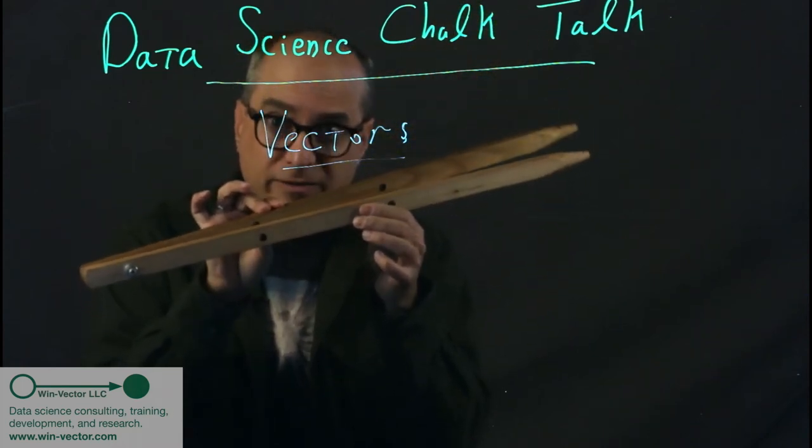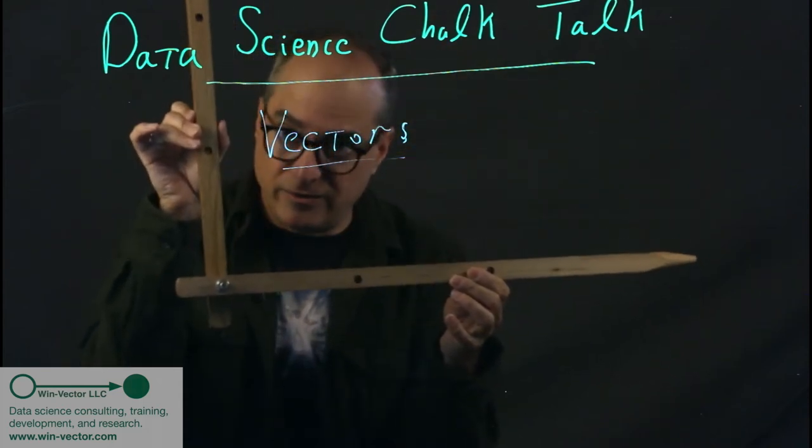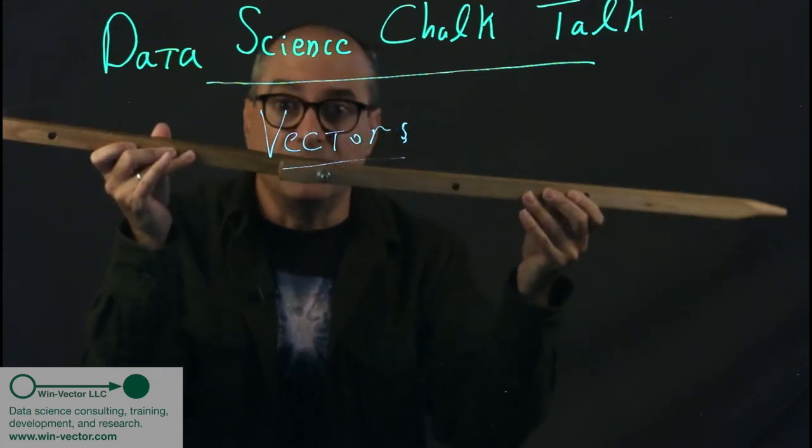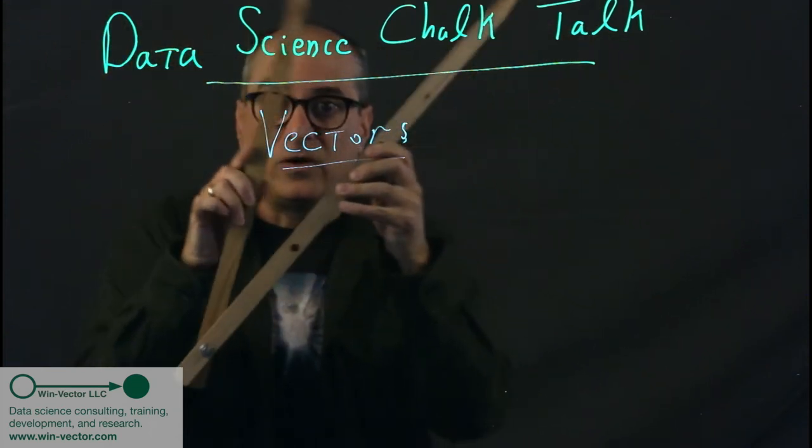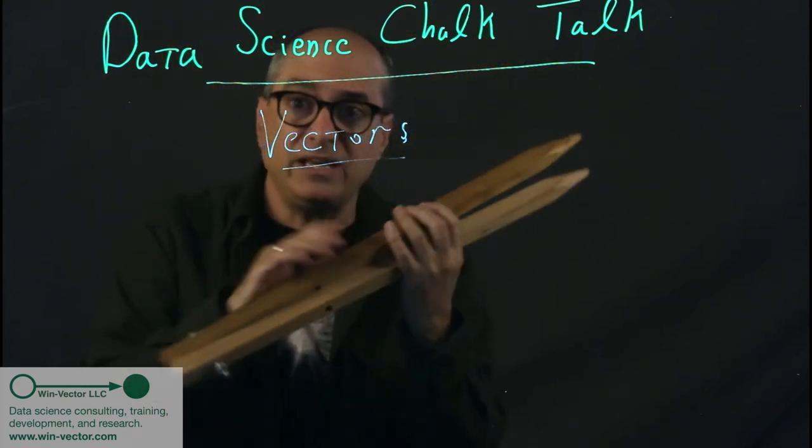Often we'll get this by computing the correlation, which is the arc cosine of the angle. So cosine of zero degrees is one, so this is a correlation of one. Correlation of zero here, which is an angle of 90 degrees. Correlation of negative one, which is an angle of 180 degrees.